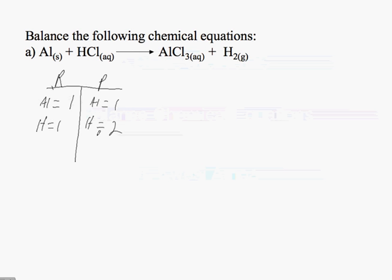So 1 and 2 aren't equivalent. In order for me to make them equivalent, I have to multiply the reactant side times 2, which means that I will have a 2 in front of HCl. So now my hydrogens are equivalent.